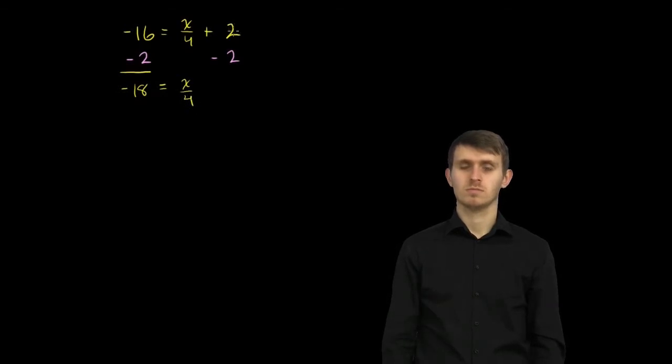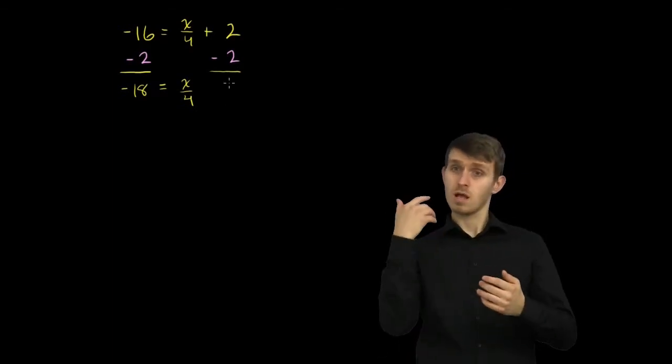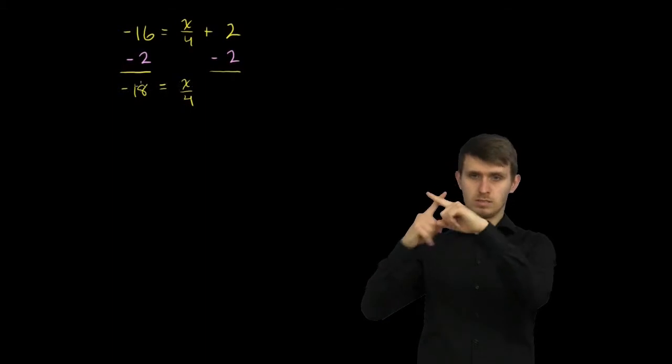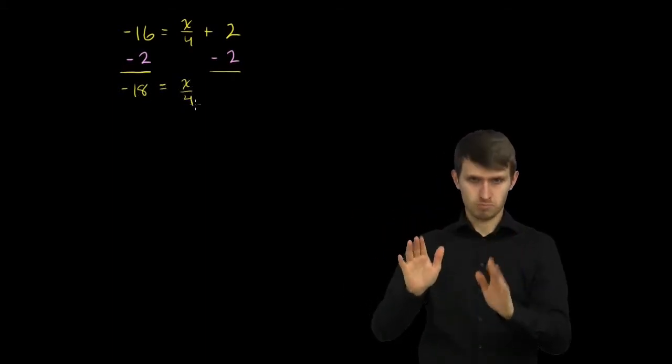And then we have positive 2 minus 2, which is just going to be 0. So we don't even have to write that. I could write just a plus 0, but I think that's a little unnecessary. And so we have negative 18 is equal to x over 4.